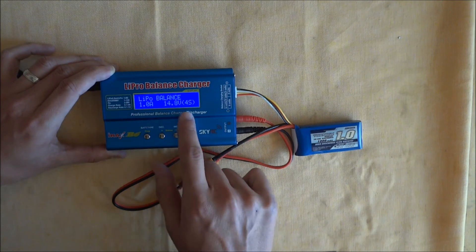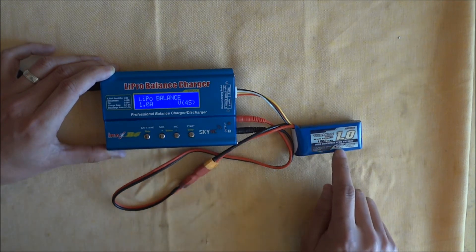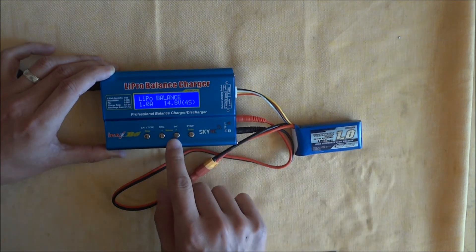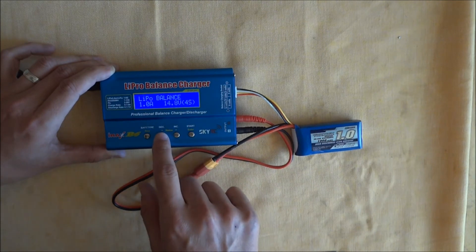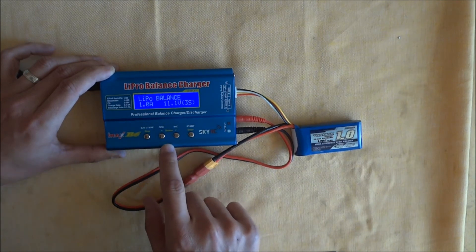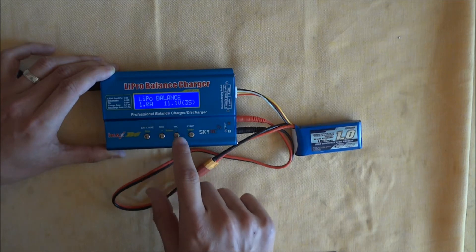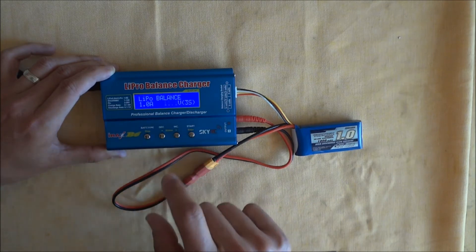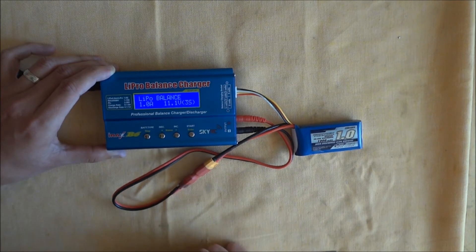And now this has selected a 4S, so we need to change this to 3S, which is 11.1 volts. So that's flashing. We just go left to decrease down to a 3S, 11.1 volts and enter to put that in.